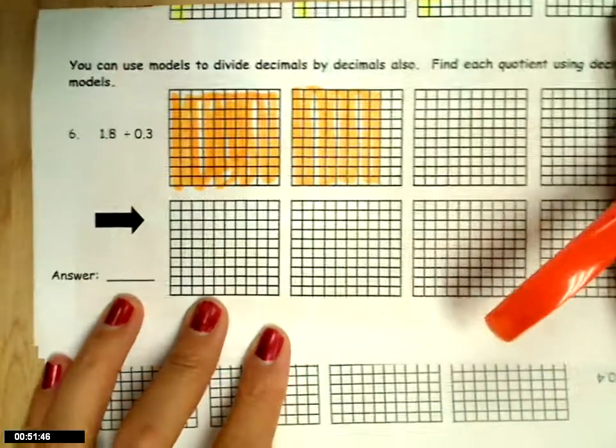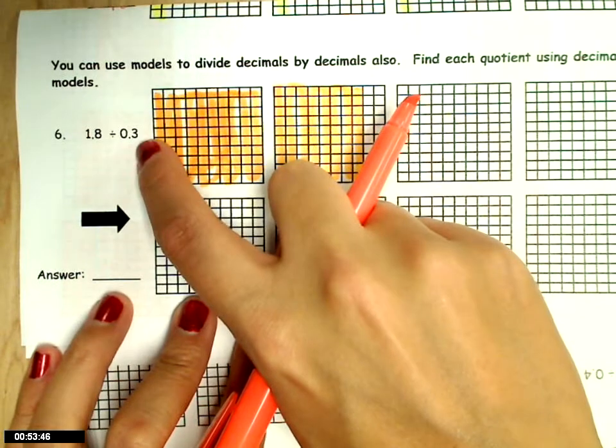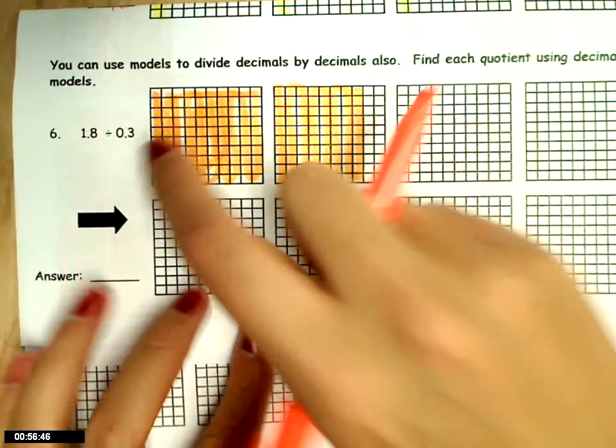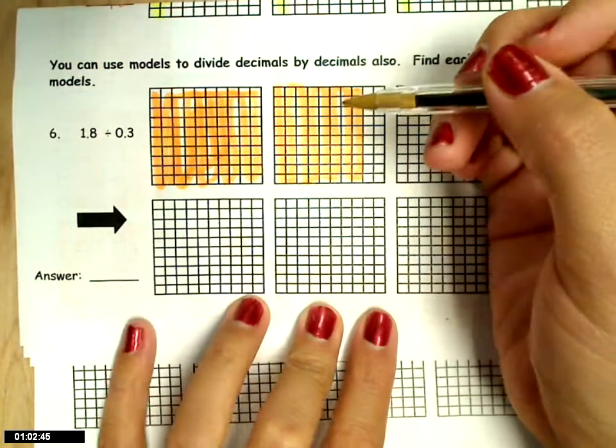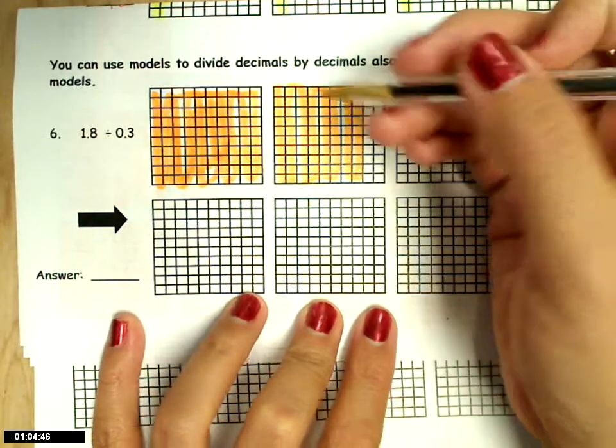Okay, now I have to count out 3 tenths and make a group. So instead of shading, I'm going to go ahead and grab a different color and make loops around my 3 tenths.